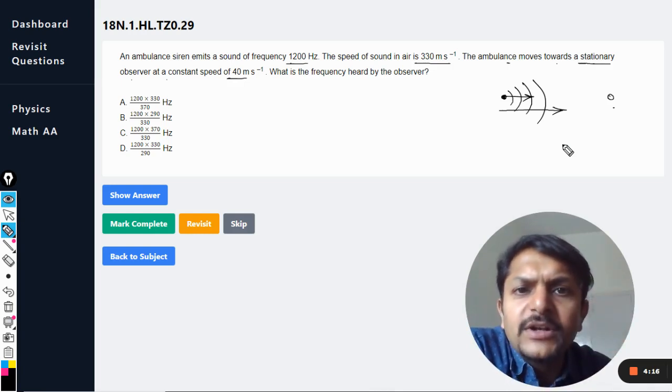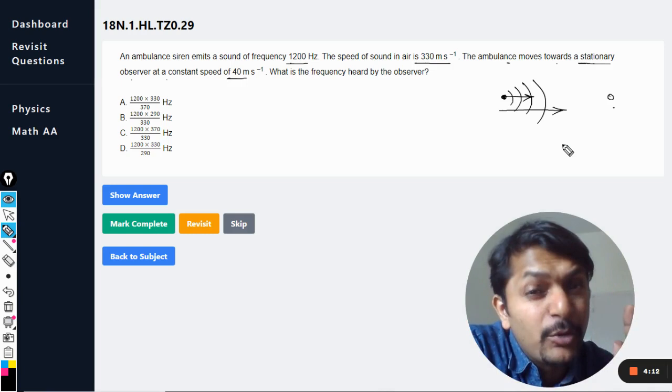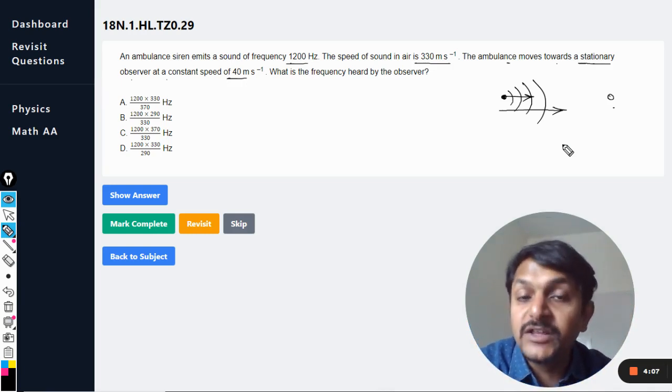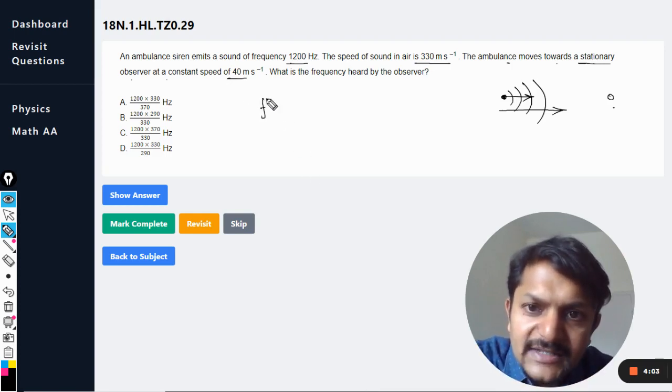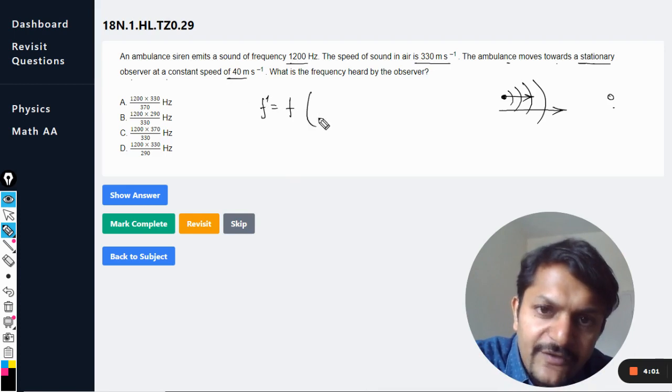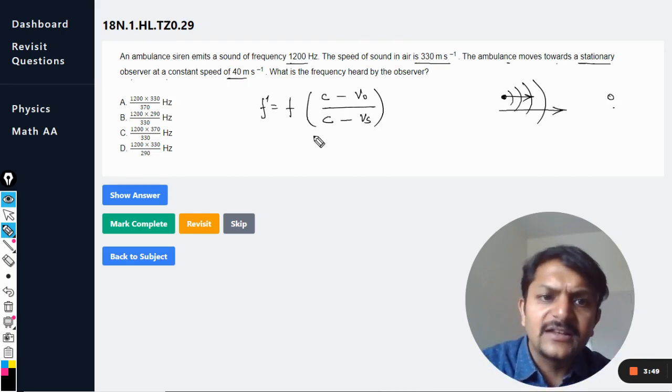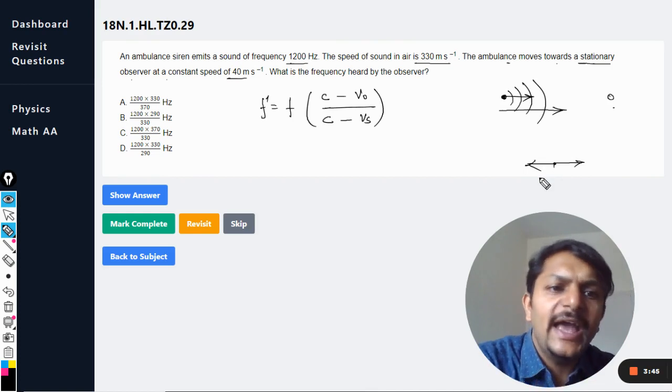As I have mentioned so many times, please do watch those videos also. In the case of Doppler's effect, I am only going to provide you with one single formula. There are four formulas or even more than four formulas given in the book, but I am going to provide you with one single formula. And what is that? f' = f × (v_sound - v_observer) / (v_sound - v_source).